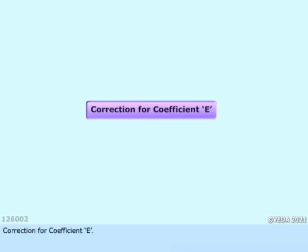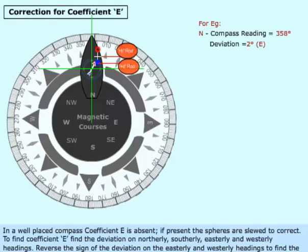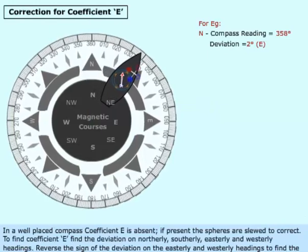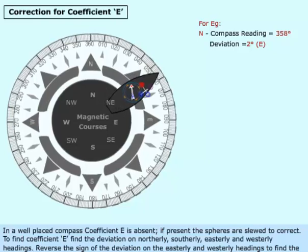Correction for coefficient E. In a well-placed compass, coefficient E is absent. If present, the spheres are slewed to correct.